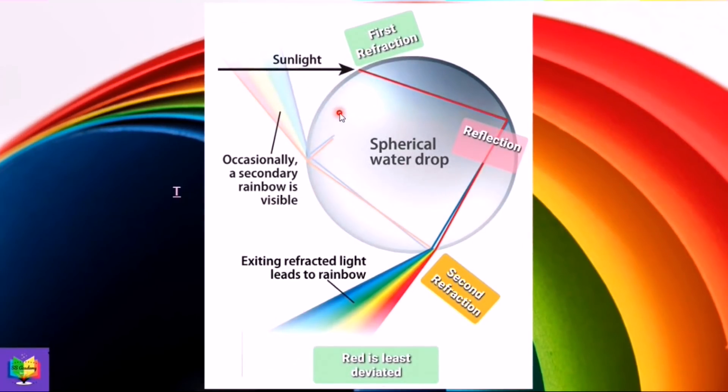This is a water droplet in air. When sunlight is incident at this surface, refraction will take place. As light is traveling from a rarer to a denser medium, that is from air to water, the light will be refracted towards the normal.